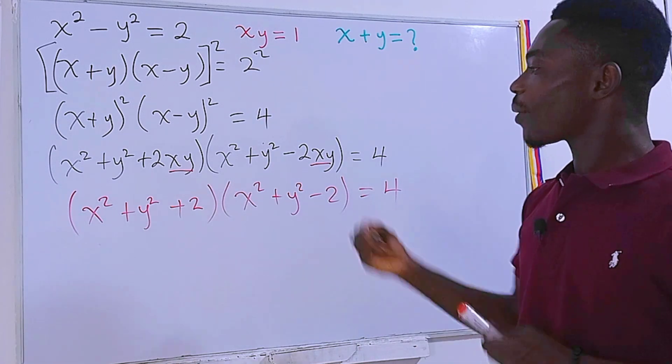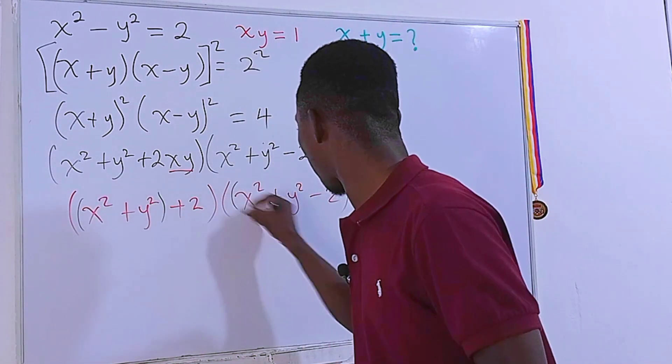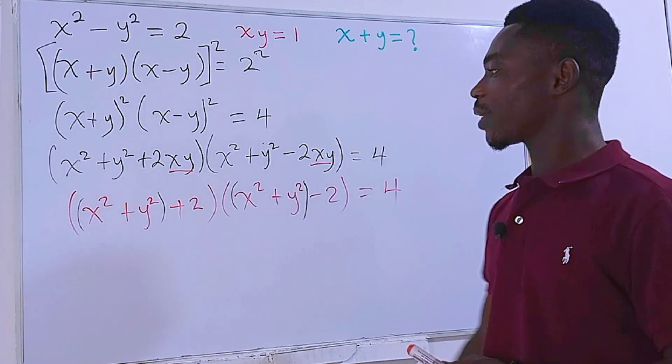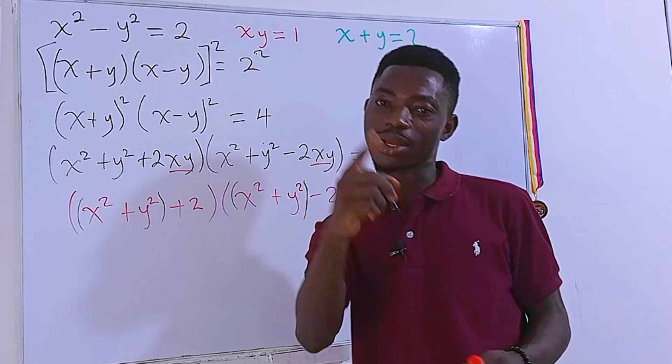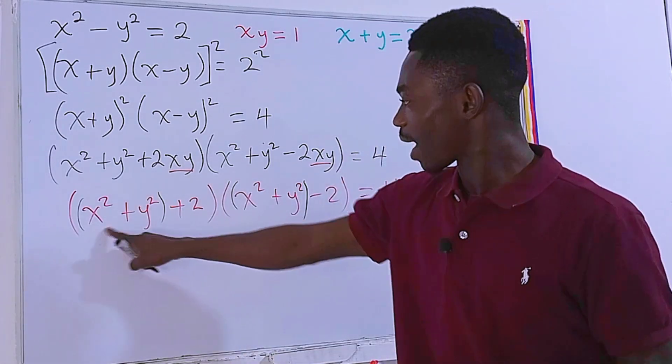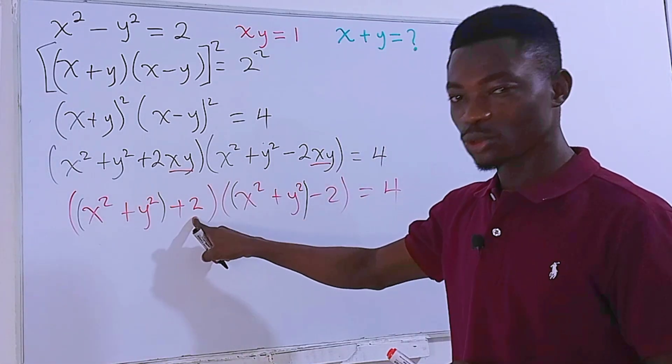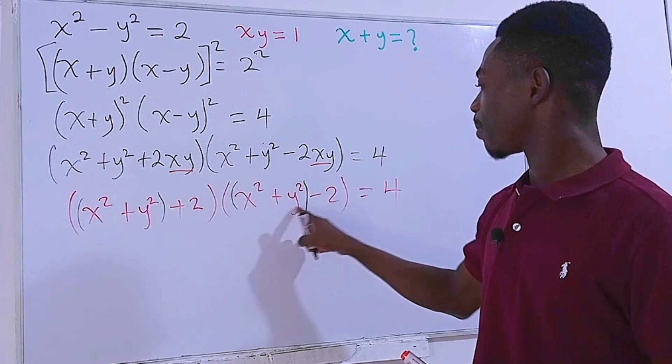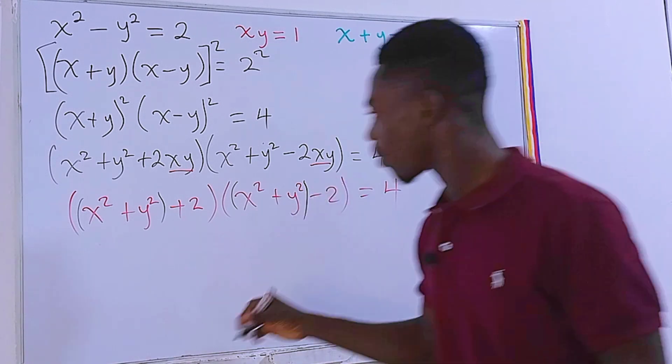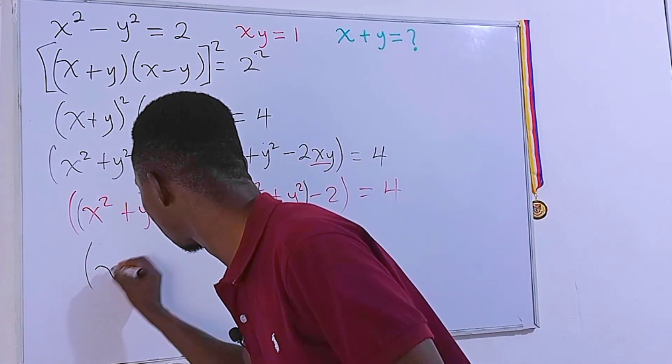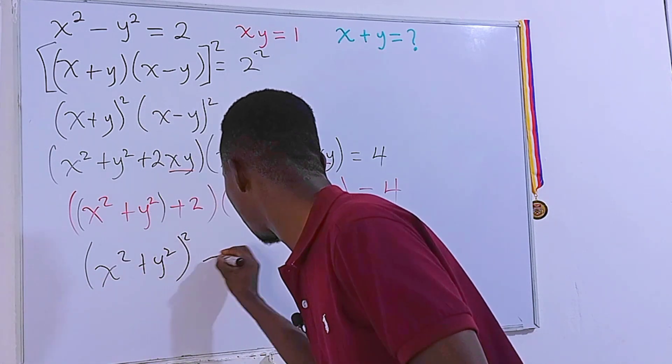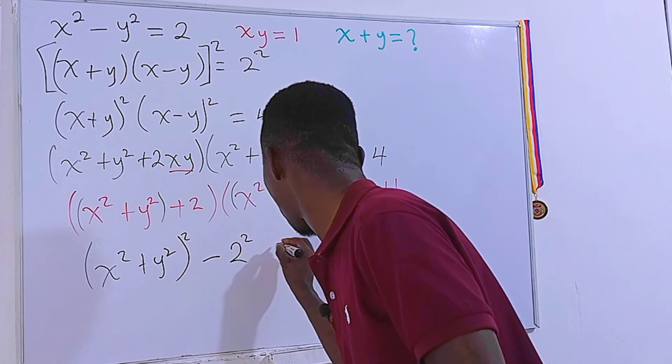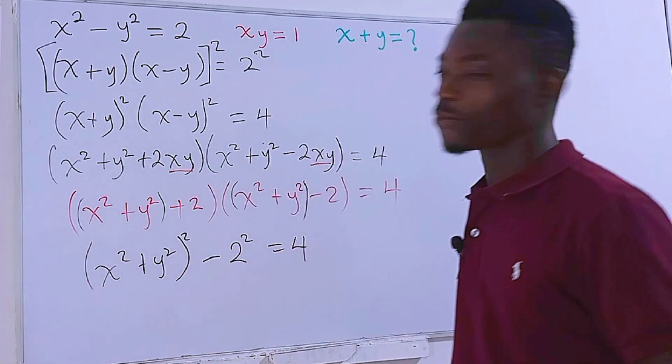Now, as soon as we put these right here into parenthesis, we can clearly see that we are now dealing with difference of 2 squares. Once again, check it out. x squared plus y squared plus 2, x squared plus y squared minus 2. In fact, we can also rewrite this as x squared plus y squared all squared, then minus 2 squared, which is equal to 4.